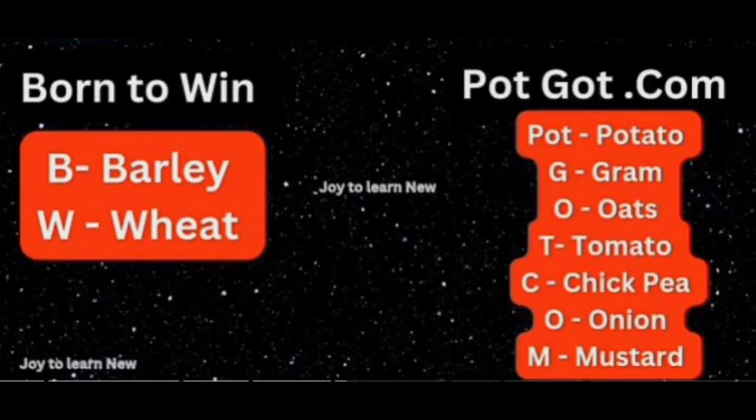The shortcut for Rabi crops is 'Born to Win Potgot.com'. B refers to barley, W refers to wheat, Pot to potato, G to gram, O to oats, T to tomato, C to chickpea, O to onion, and M stands for mustard.